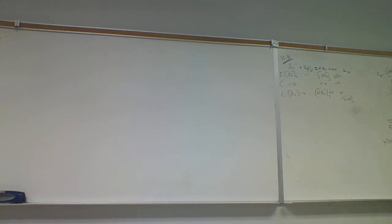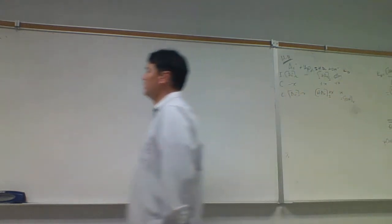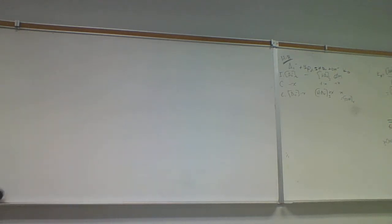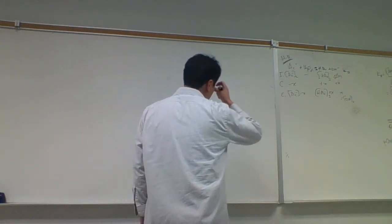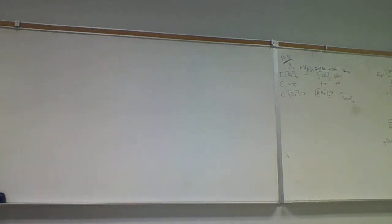Going through the Kb calculation gives a pOH which leads to a pH of 4.74 — the same as before. Either one would work, but not both together. Sometimes people add up the pHs and pOHs, which is wrong. The Henderson-Hasselbalch saves you considerable time because you don't have to do all that.